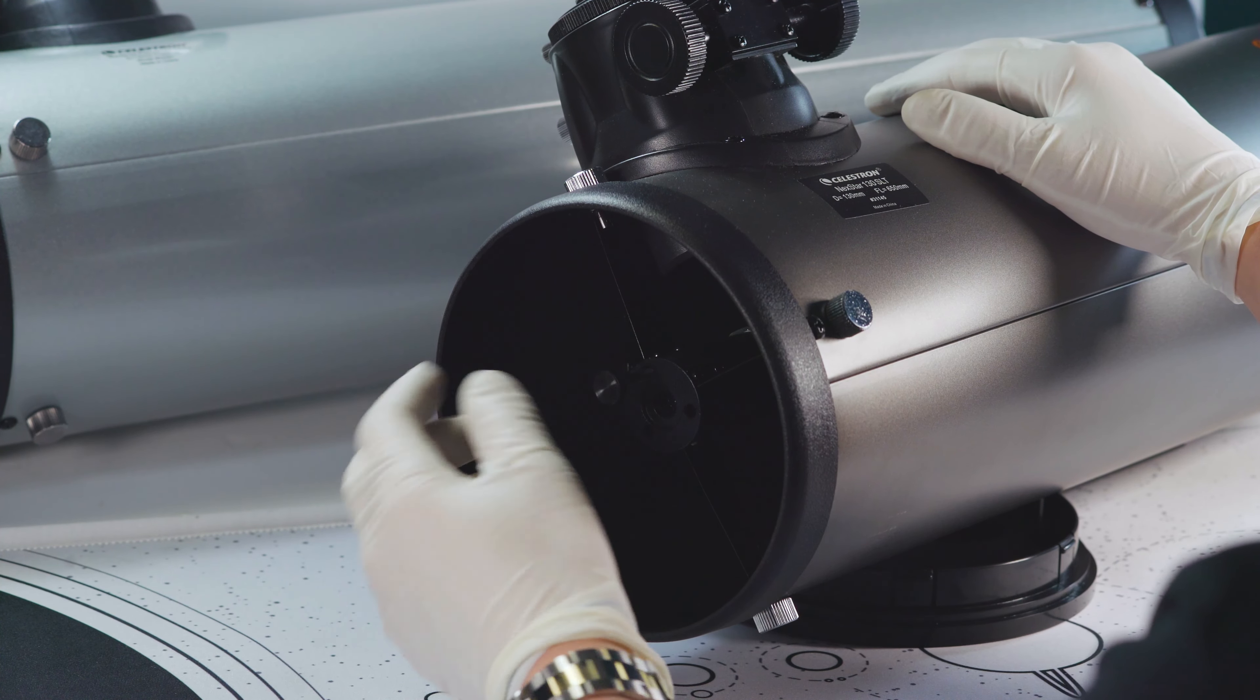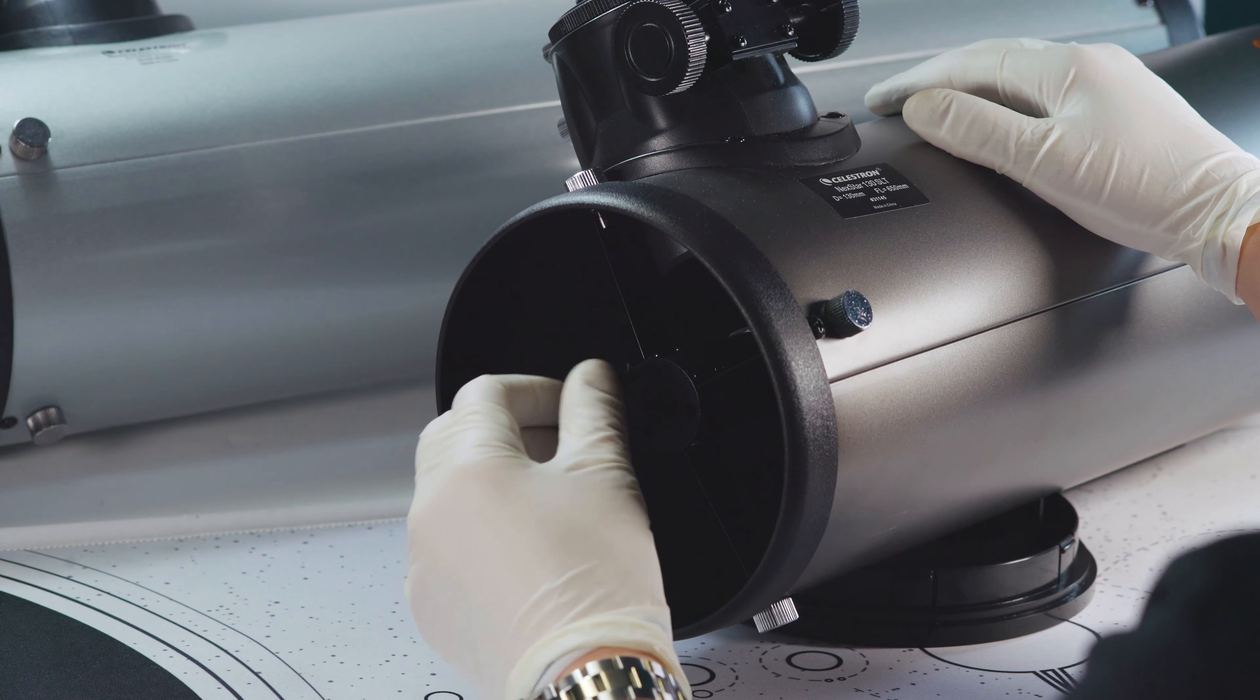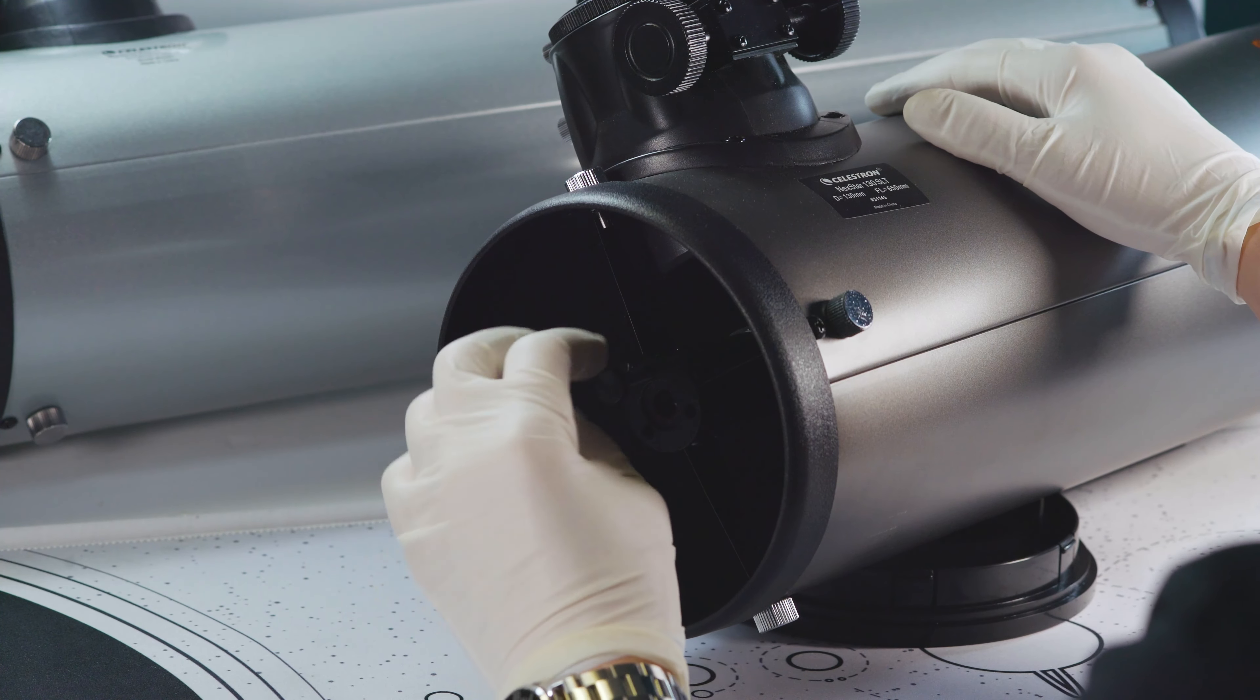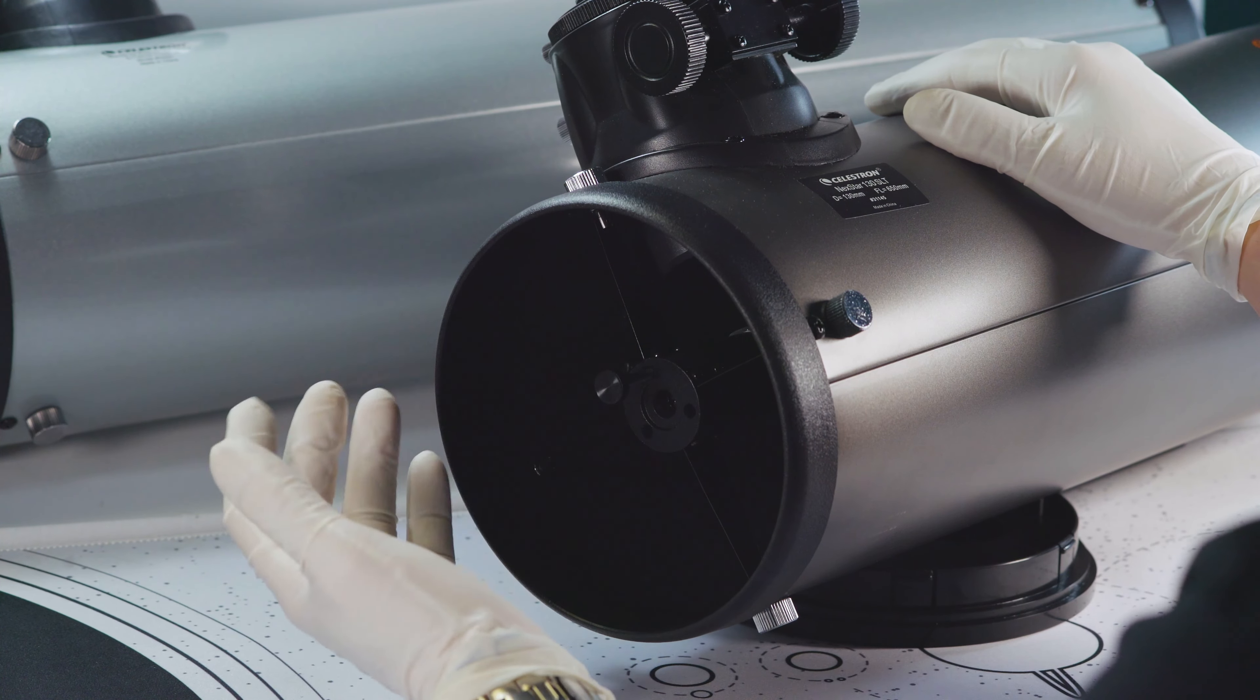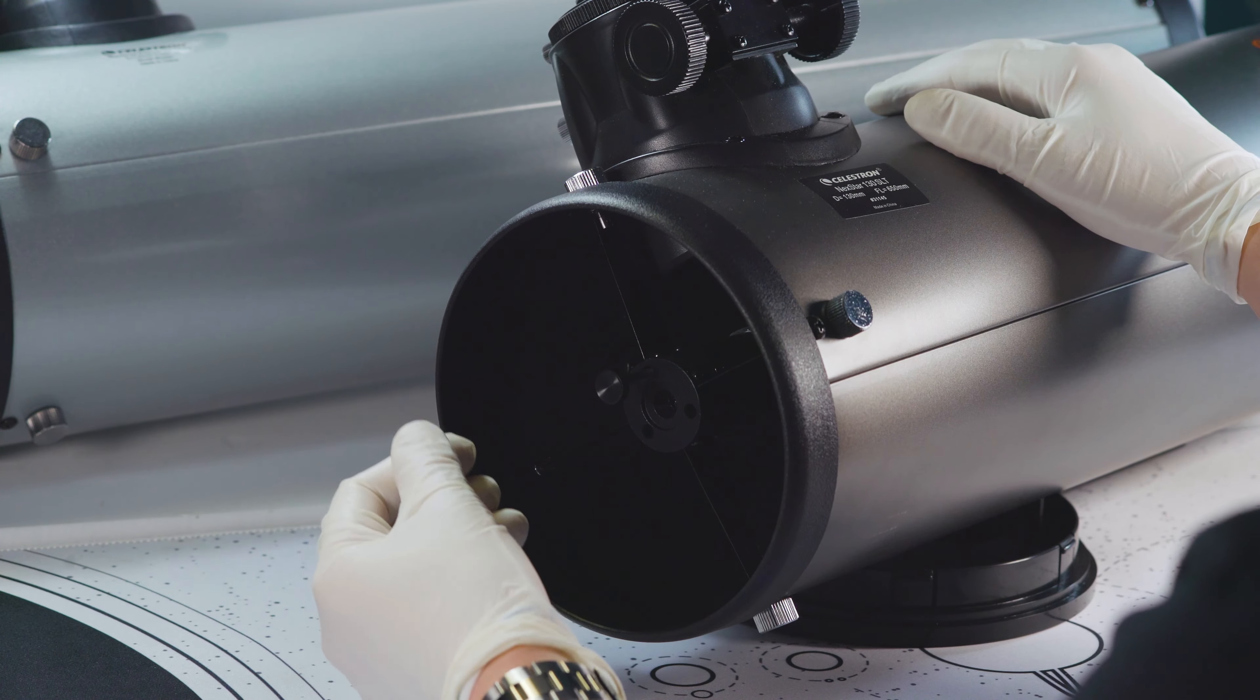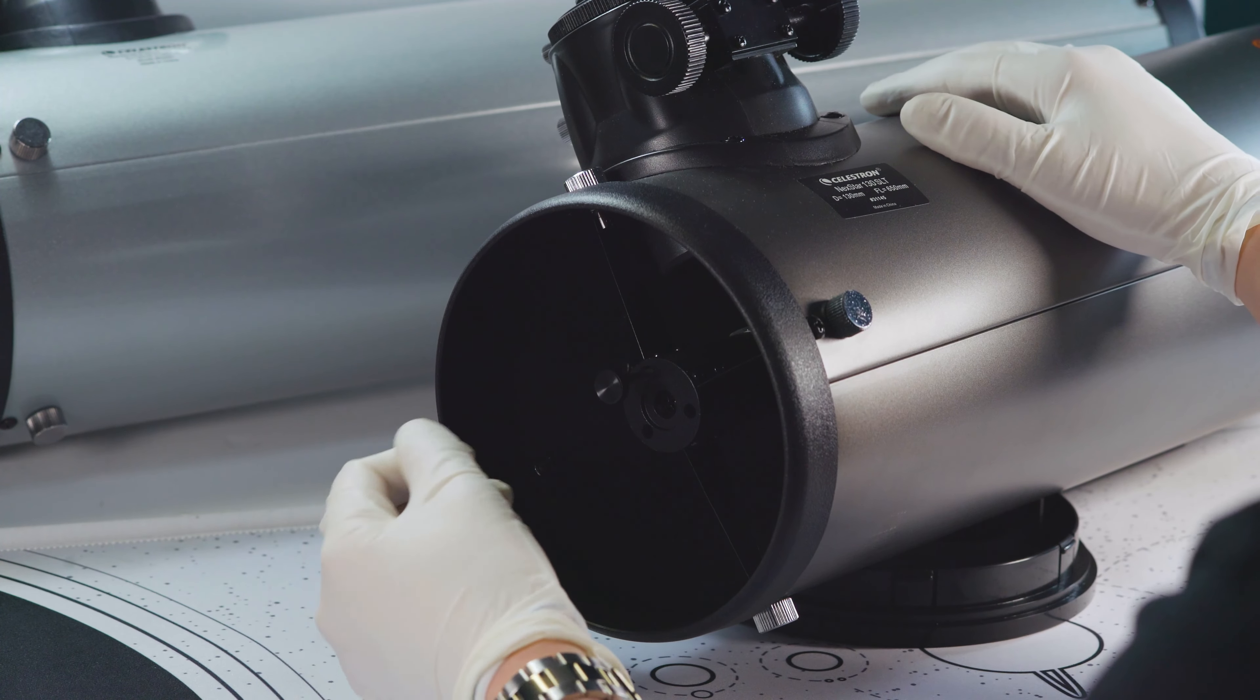Now you don't necessarily have to do that. It's just a good way to make sure that you're not cross-threading anything. If you're threading this in and you feel any bit of resistance or grit, stop what you're doing, unthread this, and inspect the threads for any damage or grit or anything stuck in there. If you see any grit, clean it out and restart the process. If you see any damage to these threads, just reinstall the stock screw and again give us an email or call.